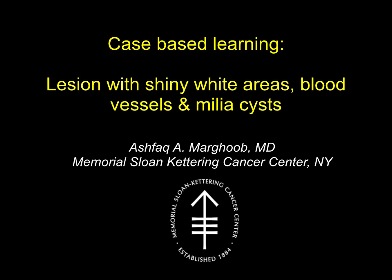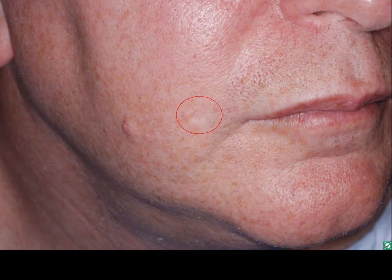Hi, this is Ashwak Margub, and welcome to this case-based learning podcast regarding a lesion that reveals shiny white areas, a few blood vessels, and milia cysts. This patient presented with a stable lesion on the cheek. It has a slightly raised border with an indentation.